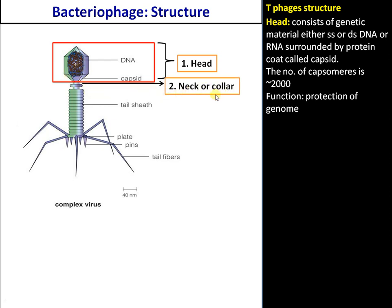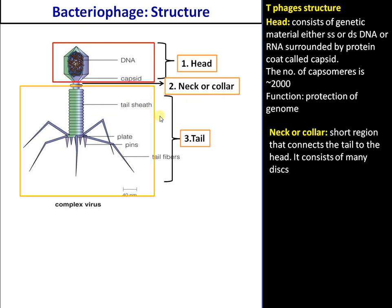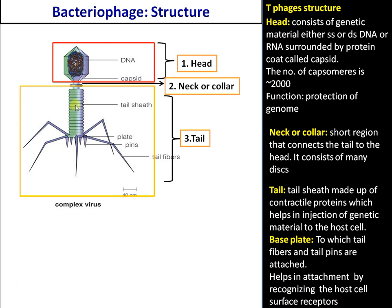The second region is called the neck or collar, which connects the head to the tail region. The third region is the tail, which consists of a hollow cylinder made up of contractile or flexible movable proteins. The function of the tail region is to inject the genetic material into the bacterium.